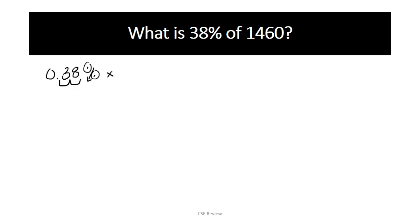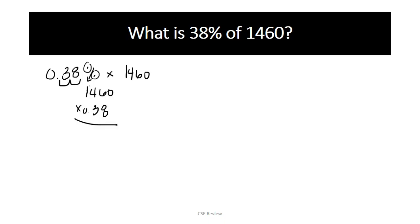'Of' means multiplication. So 0.38 times 1460 — that is if you want to use the long method. So 1460 times 0.38: you move the decimal places and multiply all of those things. But I recommend easier approaches, like finding the numbers that make up your 38%.